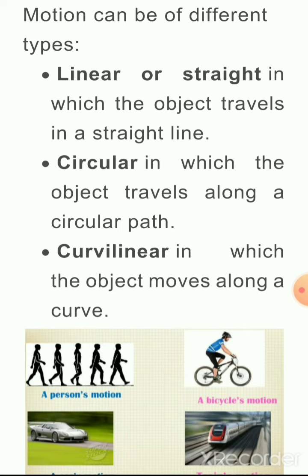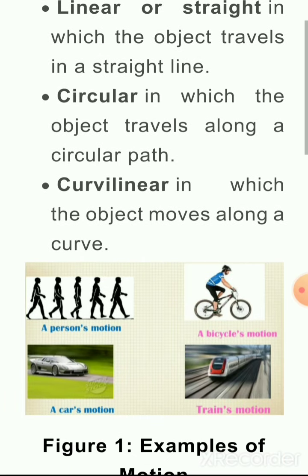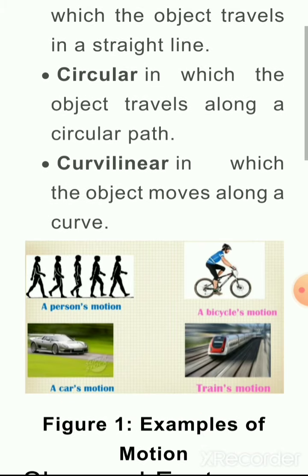Curvilinear motion: the object moves along a curve. यानि कि जब कोई object curve path पे move करता है — curve मतलब ना वो circle होता है और ना वो straight होता है, जुका हुआ — उसको curve कहेंगे।